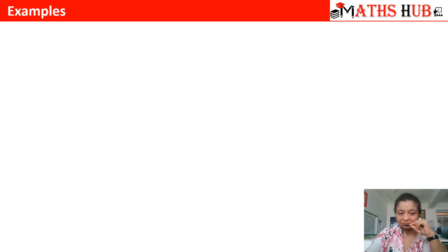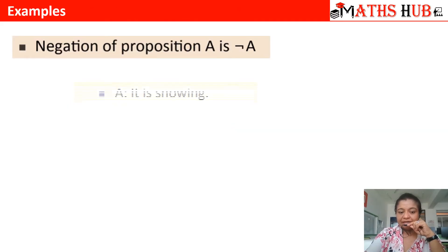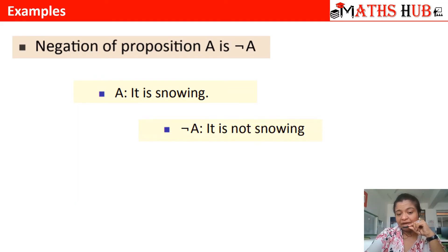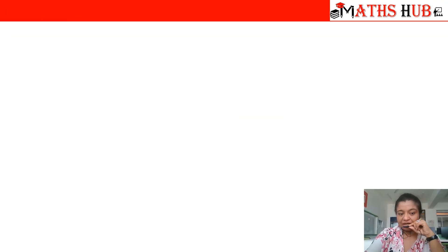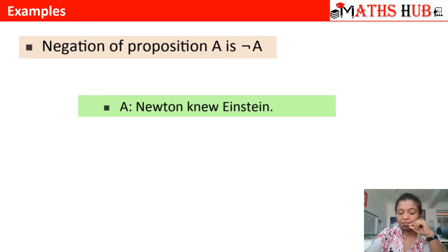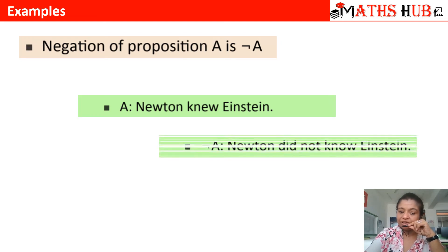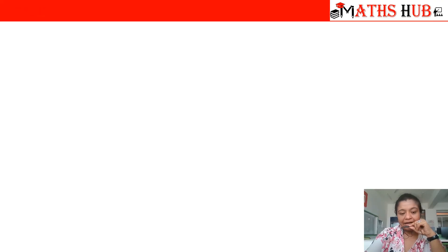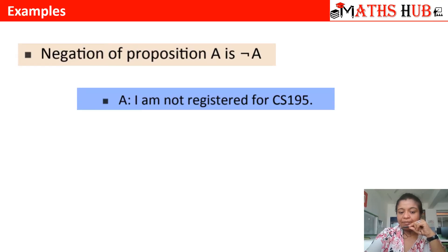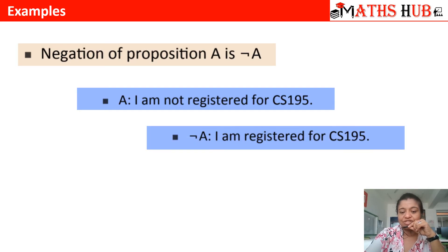Let us take a few more examples. The proposition 'It is snowing' has the negation 'It is not snowing'. Similarly, for 'Newton knew Einstein', the negation is 'Newton did not know Einstein'. Likewise, for the statement 'I am not registered for CS 195', the negation would be 'I am registered for CS 195'.